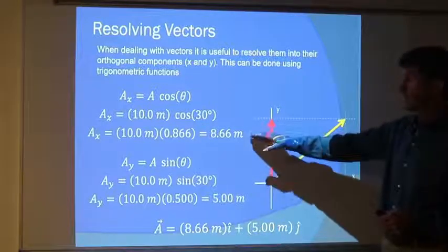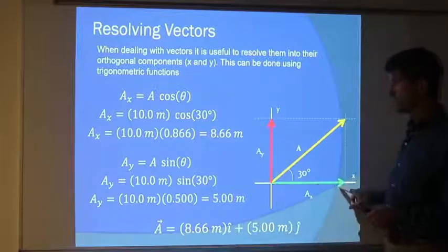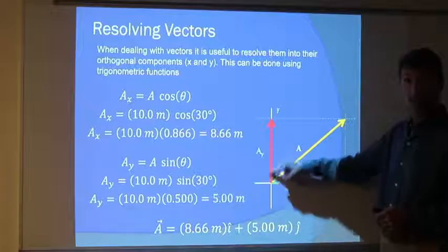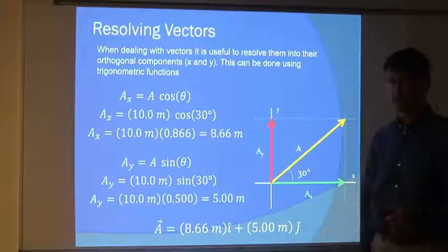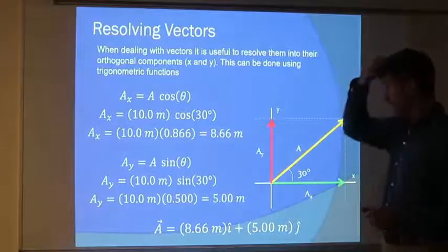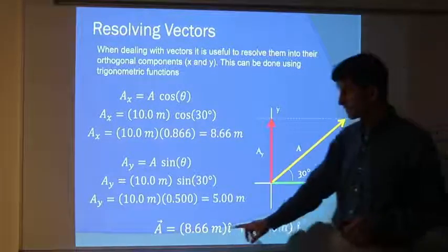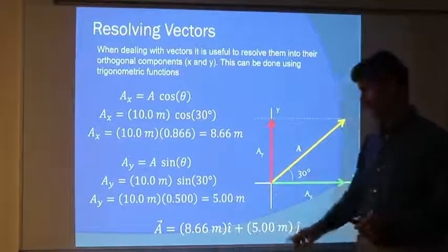So there's my x component, 8.66 meters in this direction. There's my y component, 5 meters upward. And the total length of the vector is 10. I can write this vector as a sum of the x component plus the y component.